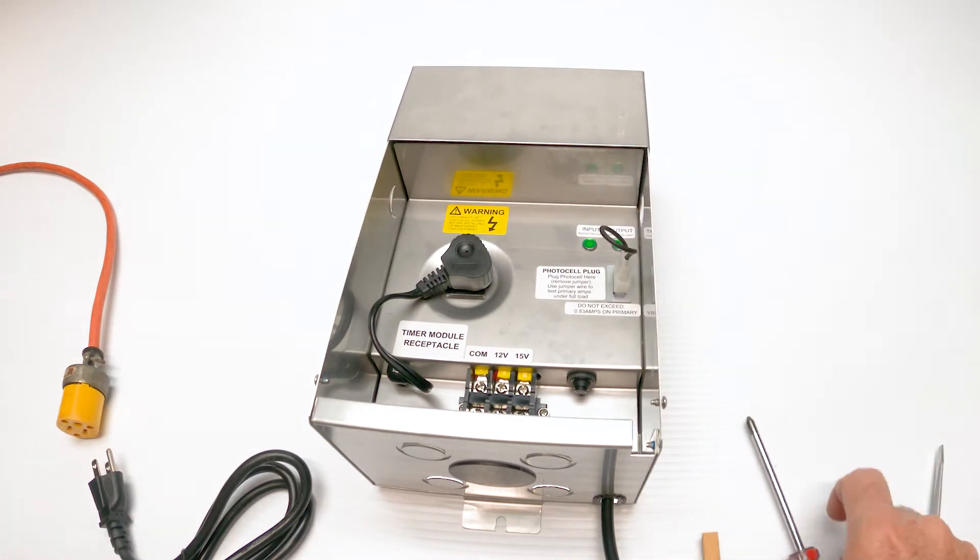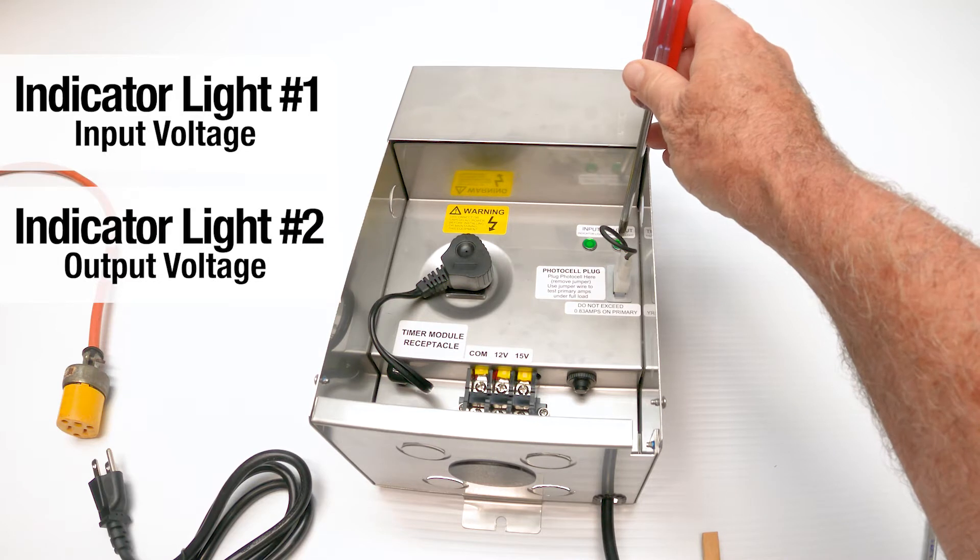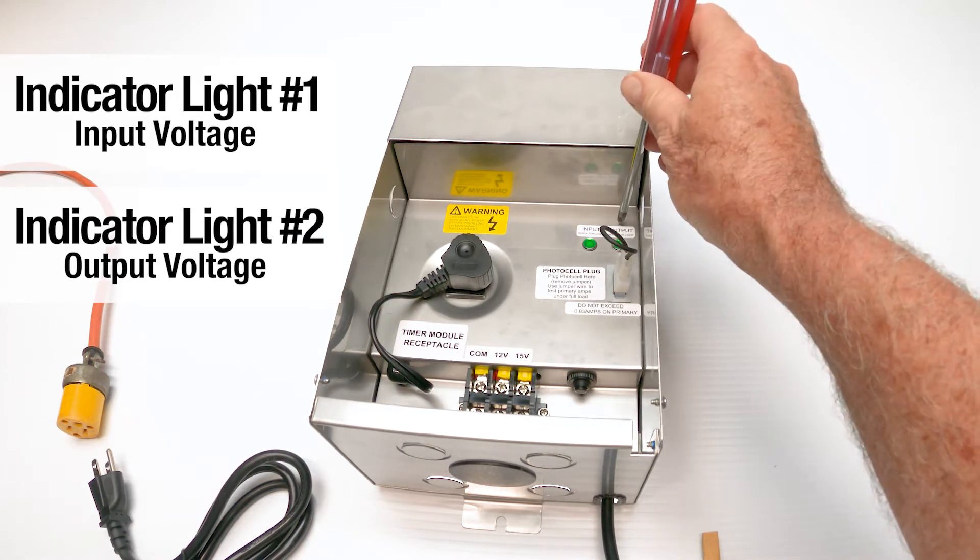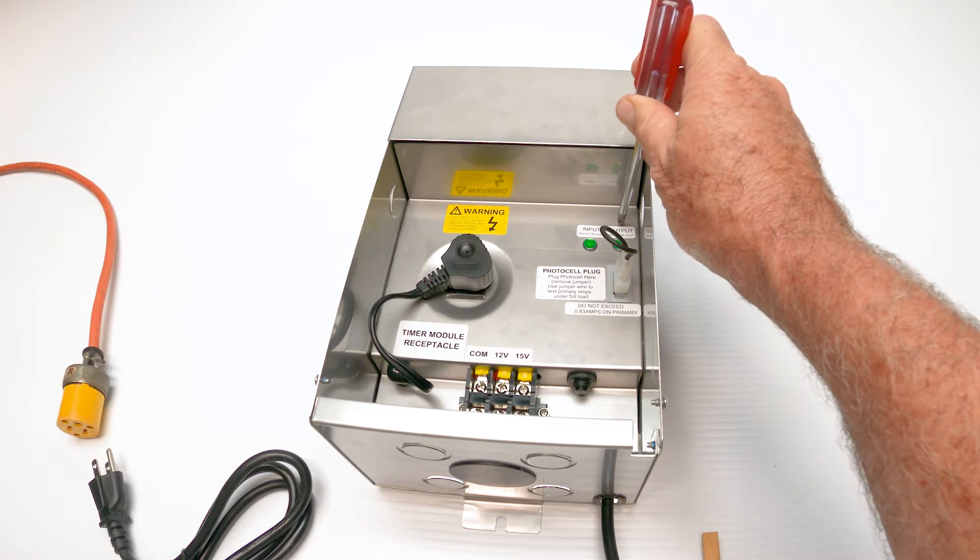There's two indicator lights up here. I'll use my screwdriver to point them out. Indicator light input and indicator light output. Output means the unit's working and making 12 volts that can run out to your landscape lighting system.